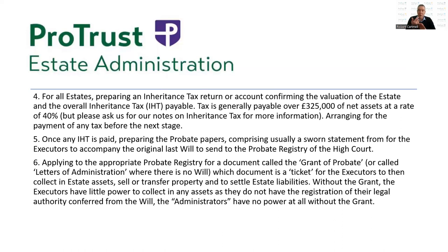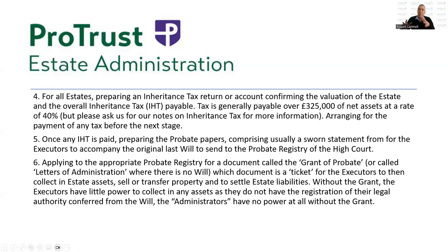You have something called the residence nil rate band that usually for families will add £175,000 of extra tax allowance, totalling £500,000 per individual. There are certain circumstances and parameters for claiming that relief, so understanding that process is an important factor and executors have to be sure that someone responsible is dealing with it. Generally, tax must be paid upon applying for probate, so before probate — which is the official certificate of entitlement for executors to administer the assets — you may need to apply to banks, building societies, and investment holdings to get tax paid before probate.